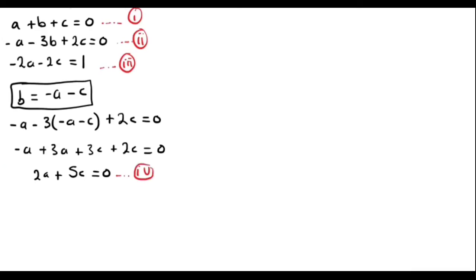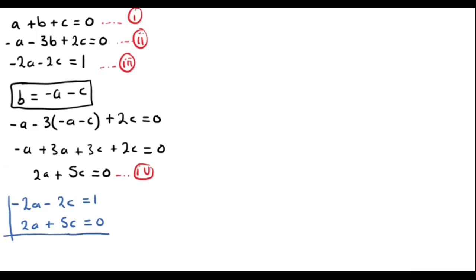We now have equation 3: -2A - 2C = 1, and equation 4: 2A + 5C = 0. Adding these two equations eliminates A: -2A + 2A = 0, and -2C + 5C = 3C. So 3C = 1, giving us C = 1/3.